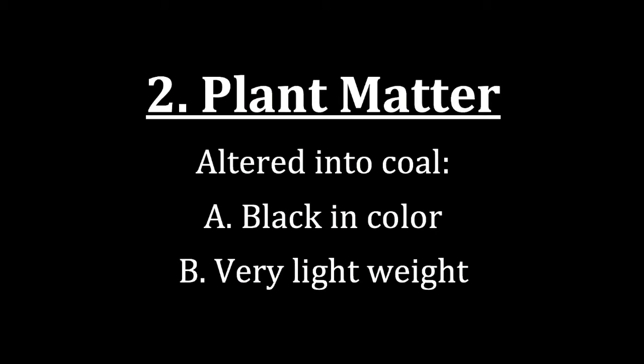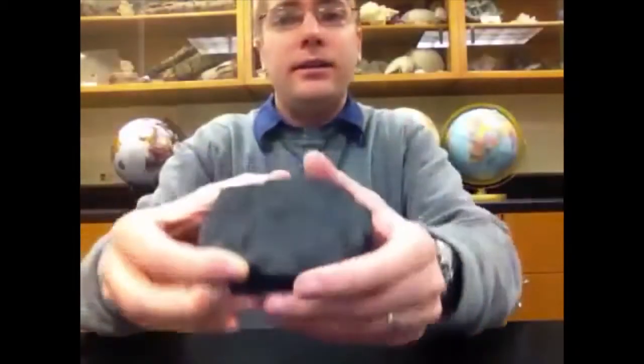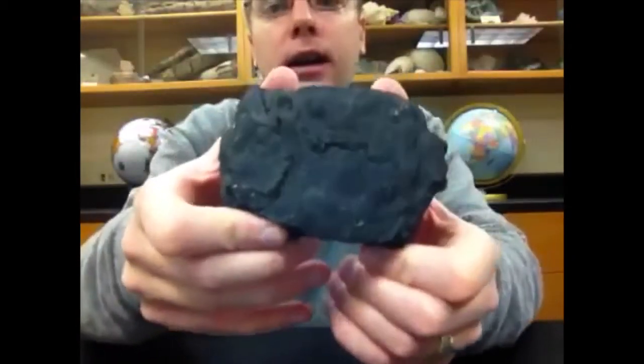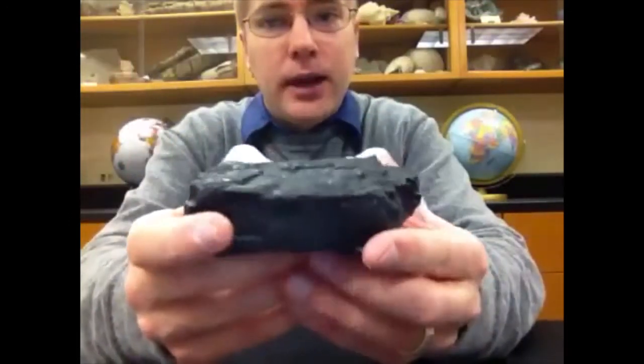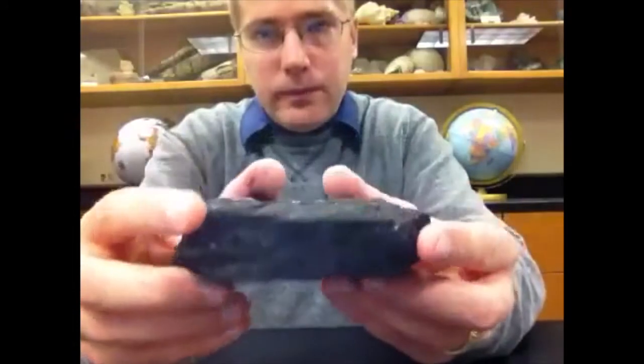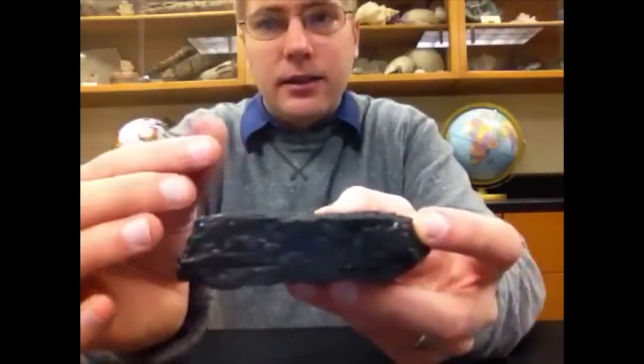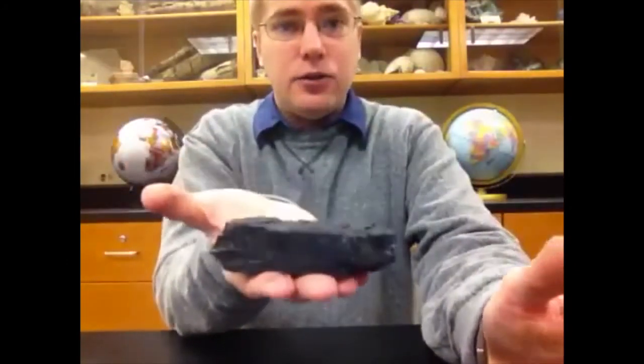The second category for biochemical rocks are those that contain or originated as plant matter. Here we're looking at original plant debris being altered into coal. When we look at samples in the lab, we're looking at a variety of coal that is black in color and very lightweight. Even though this started as leaves, bits of plant matter, grass, it has been compressed and slightly heated, altered into the black variety of coal called bituminous coal. You can see it's a little powdery, some of it comes off on the finger, and in your hand it's extremely light in weight.